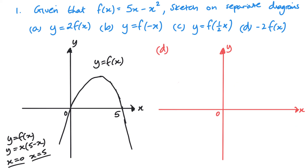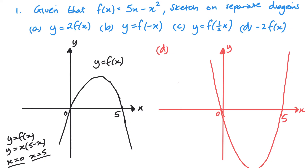Finally, part d: this time we're multiplying outside by negative 2, so this affects my y values. It's a stretch by 2 — twice the size of y values — but the negative also means it's a reflection in the x-axis, because I'm multiplying my y values by negative 2. So the x values stay the same; we're still going to go through 0 and positive 5. But my y values have been multiplied by negative 2. This point on the bottom is still at x equals 2.5, but it's at minus 12.5 on the y. So it is a reflection of part a — a reflection in the x-axis.